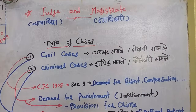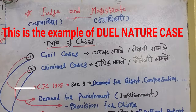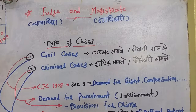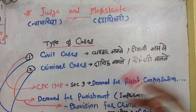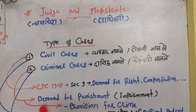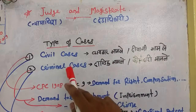For example, if you have a property dispute against someone and you file a case demanding your right — meaning that your rights be restored — and you want compensation for every day that person used your property, then in that case a civil case will be filed. On the other hand, in the same situation, if you file a case demanding punishment like imprisonment, then it includes into criminal cases.